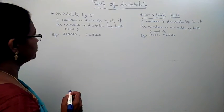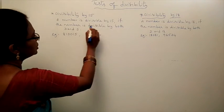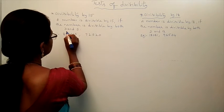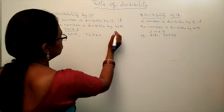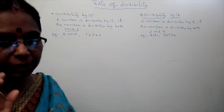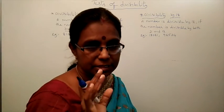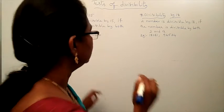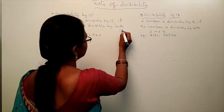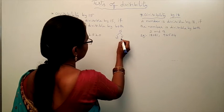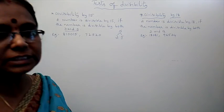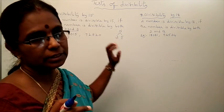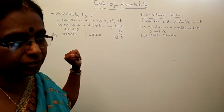What is the rule of 15? A number is divisible by 15 if the number is divisible by both 3 and 5. If the number is divisible by 15, that number must be divisible by 3 and 5. Why do we take 3 and 5? Because the factors of 15 are 3 and 5 — 3 times 5 is 15. So 3 and 5 are factors of 15.